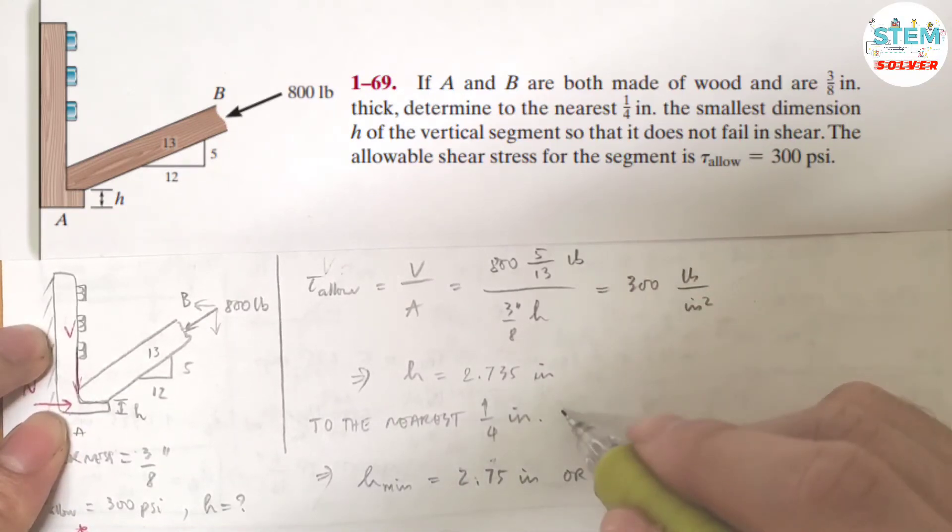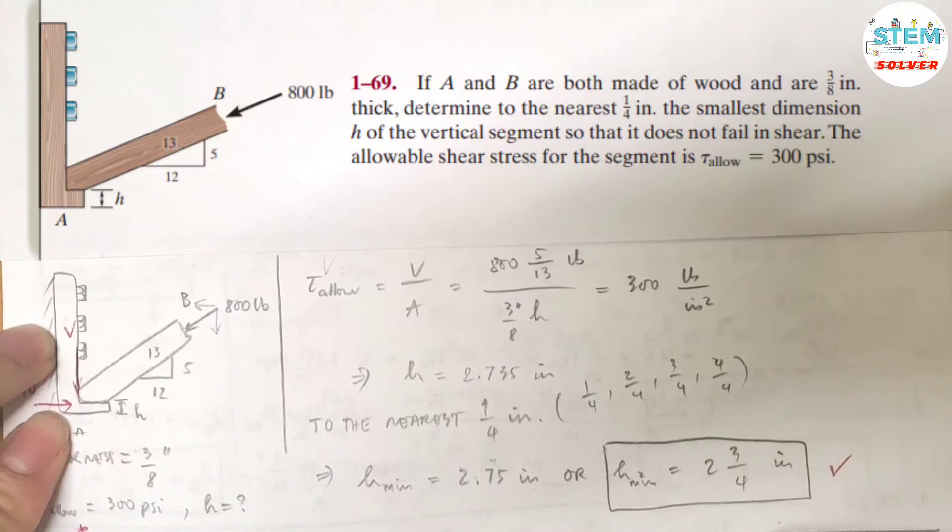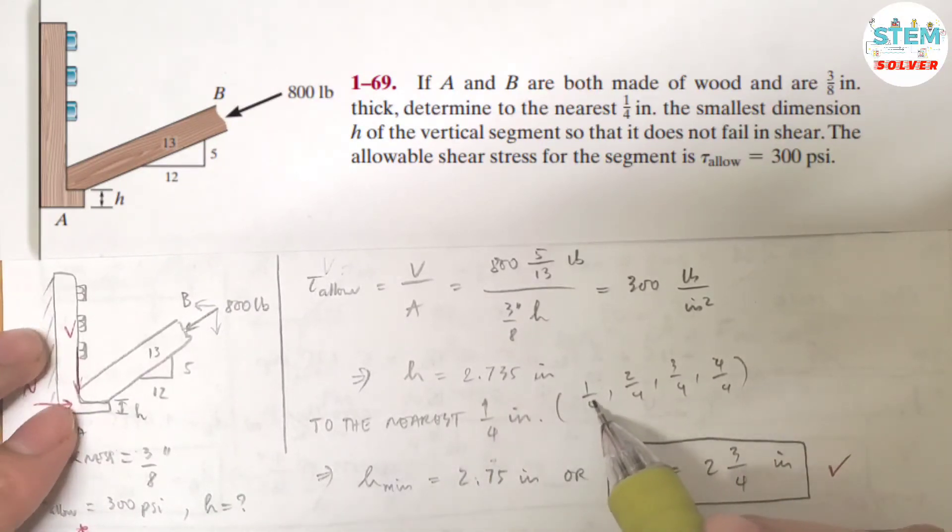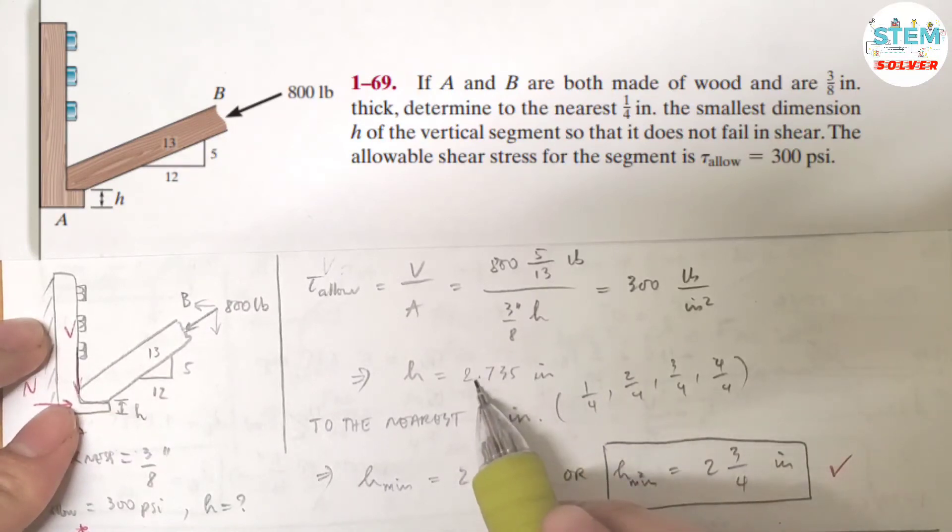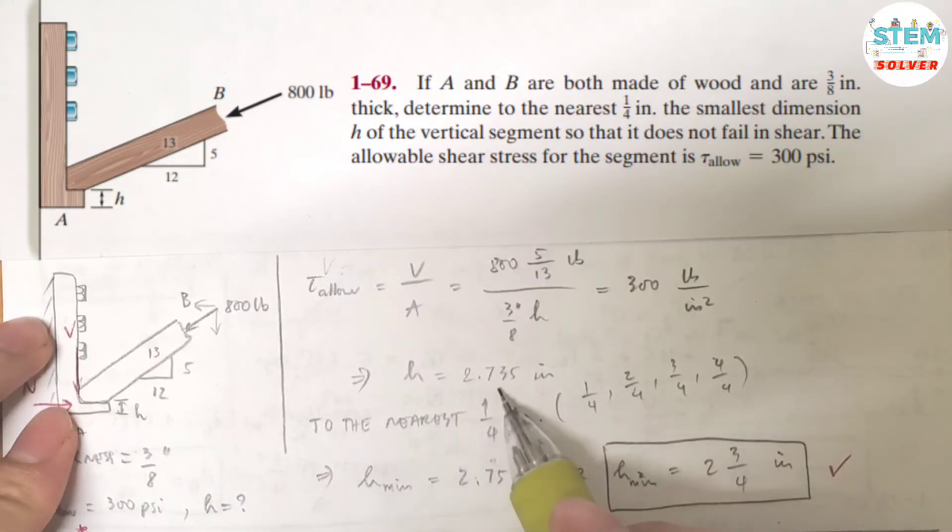So it means that you have, nearest to one-fourth, that means you have one-fourth, two-fourths, three-fourths, four-fourths. OK, so one-fourth is 0.25, that is smaller than this one, ignore it. So one-half is 0.5, you cannot take it. Three-fourths is 0.75, less than that. So four over four is 1. OK, so 1 is still less than this one. So you need 2.